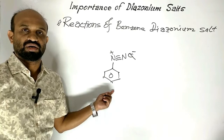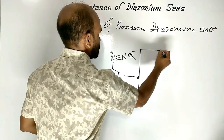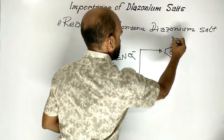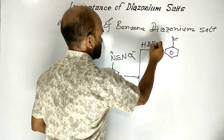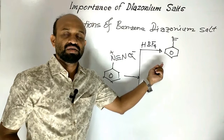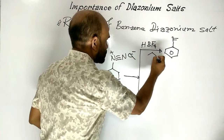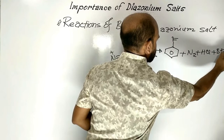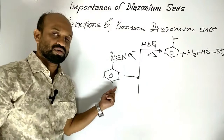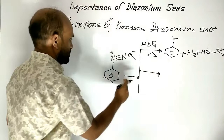This is benzene diazonium chloride, from which we can prepare fluorobenzene. When benzene diazonium salt is treated with fluoroboric acid, an intermediate compound — benzene diazonium fluoroborate — is obtained, which converts to fluorobenzene on heating. The byproducts are nitrogen, hydrochloric acid, and boron trifluoride. So fluorobenzene is prepared from benzene diazonium salt.